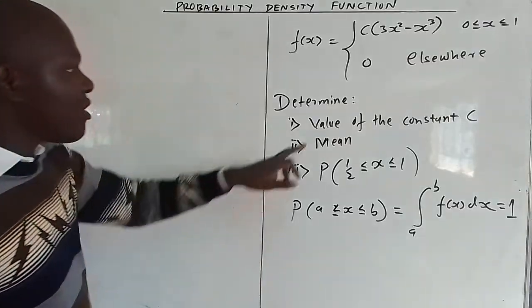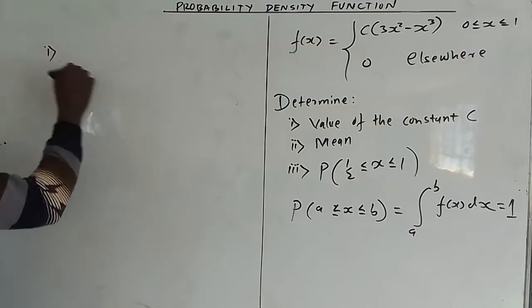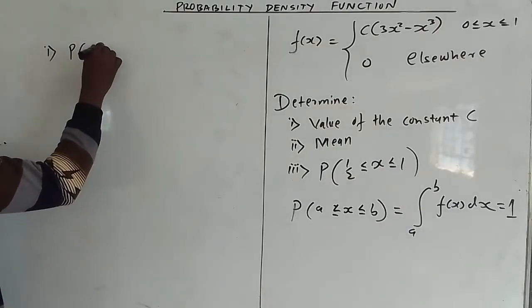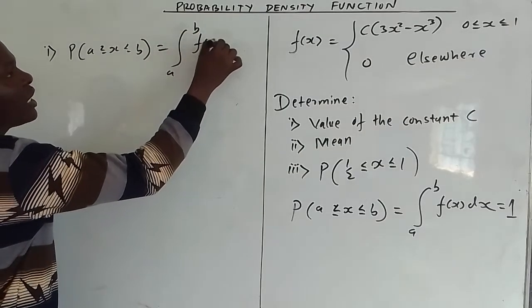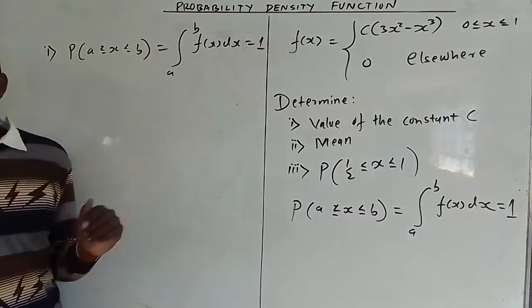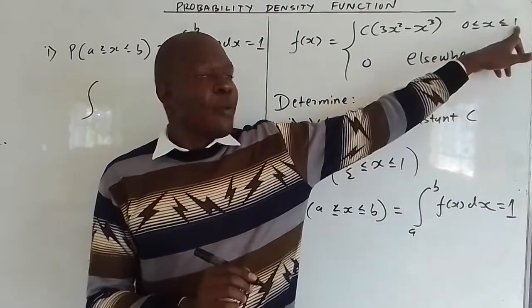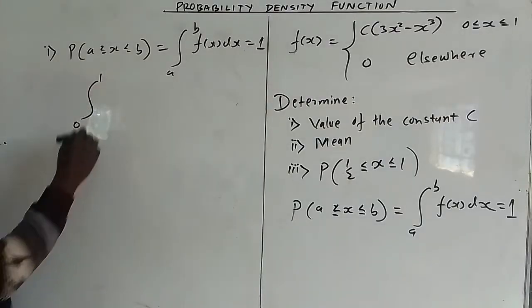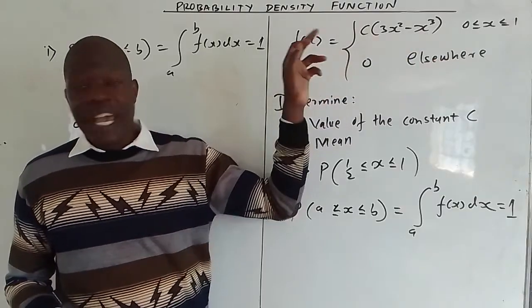So we start with part one — we want to determine the constant c. To find c, we use the fact that the probability over the whole range equals 1. We substitute a = 0 and b = 1, integrating from 0 to 1. Then f(x) is c(3x² - x³). Since c is a constant, we factorize it outside the integral.